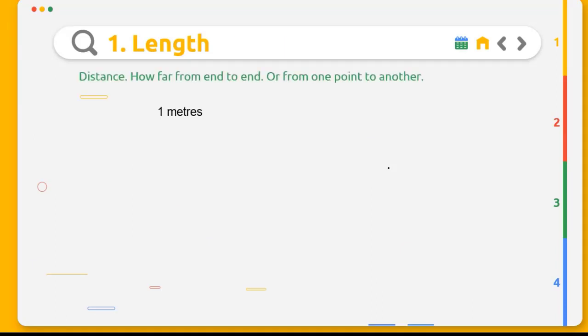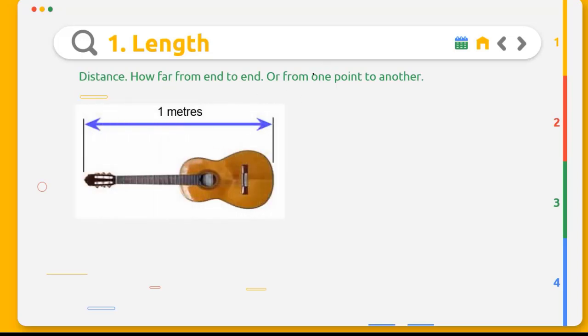First, we will learn together about length. Length has a definition: distance, or how far from end to end, or from one point to another. You can say that this guitar has a length of 1 meter, and this girl has a height of 150 cm, because you do a measurement.